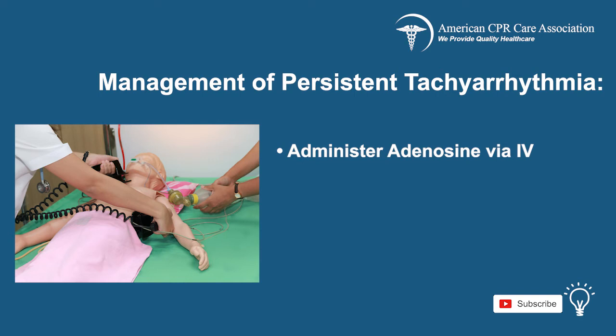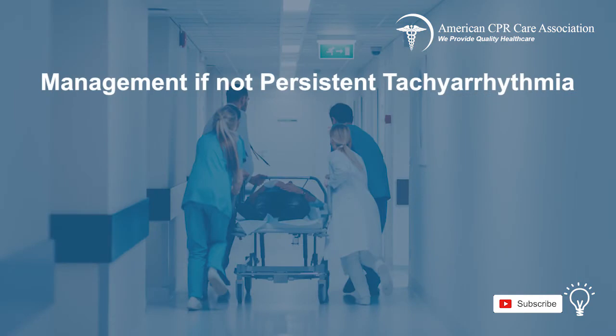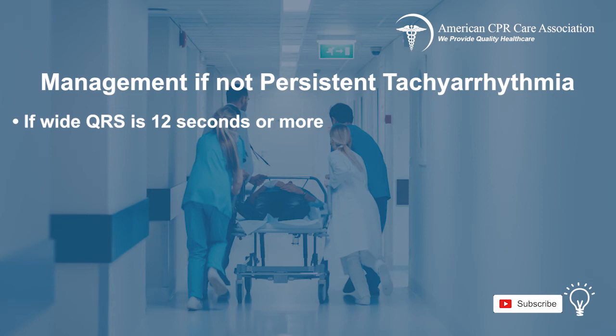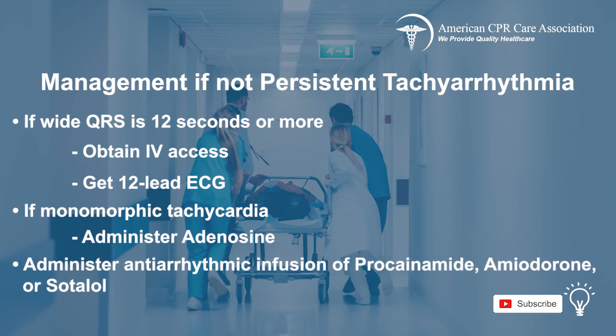Administer adenosine via IV access with the first dose of 6 mg rapid IV push and a normal saline flush. Administer a second dose of 12 mg of adenosine. If persistent tachyarrhythmia is not found to be present and if the wide QRS is 0.12 seconds or more, then obtain IV access and get a 12-lead ECG. Administer adenosine if monomorphic tachycardia is diagnosed. Administer an antiarrhythmic infusion of procainamide, amiodarone, or sotalol.